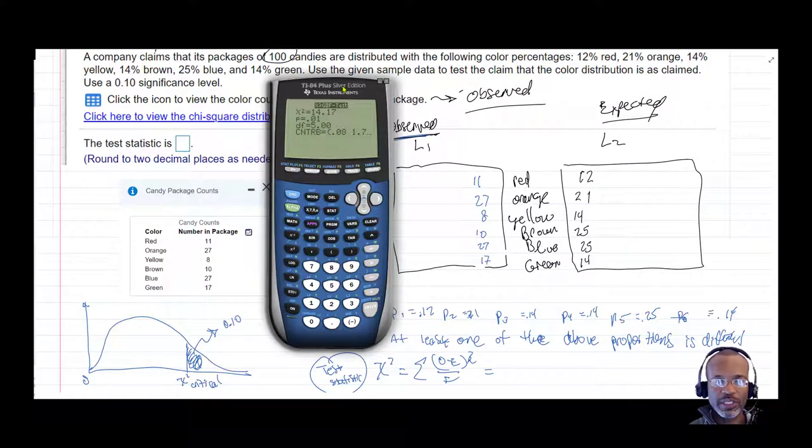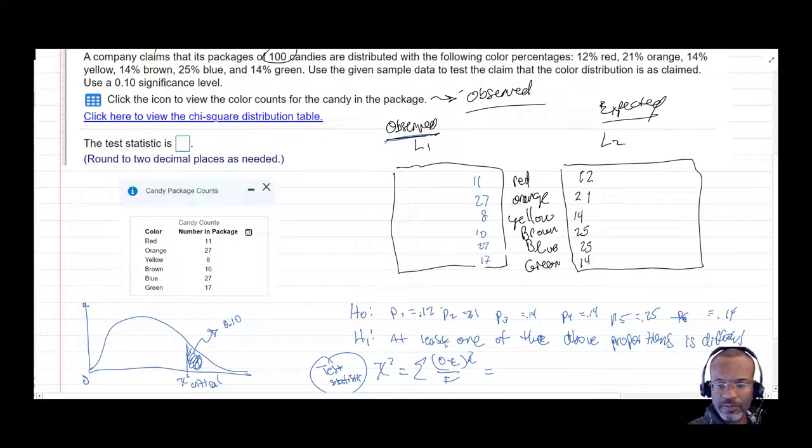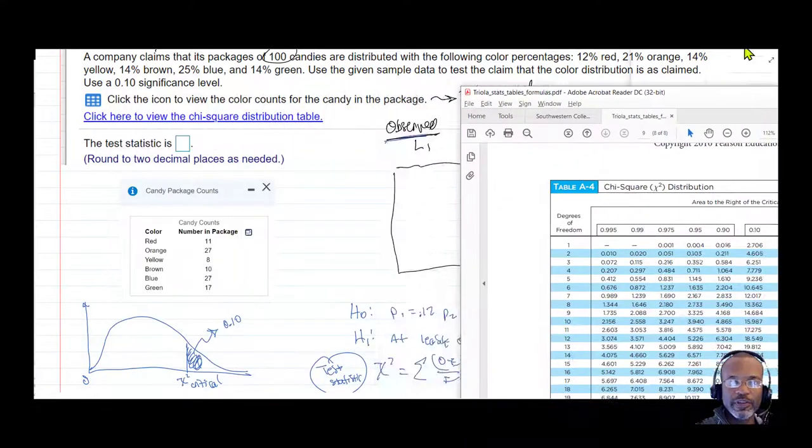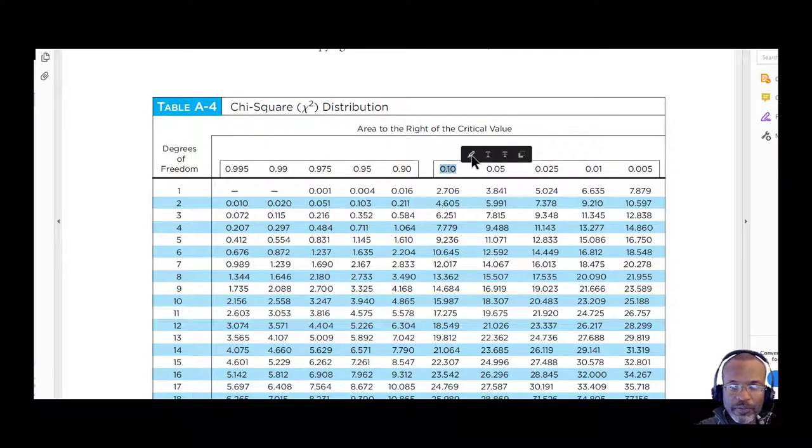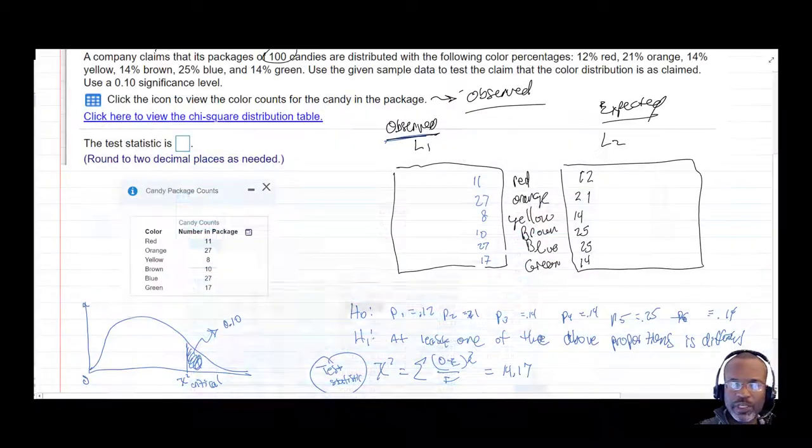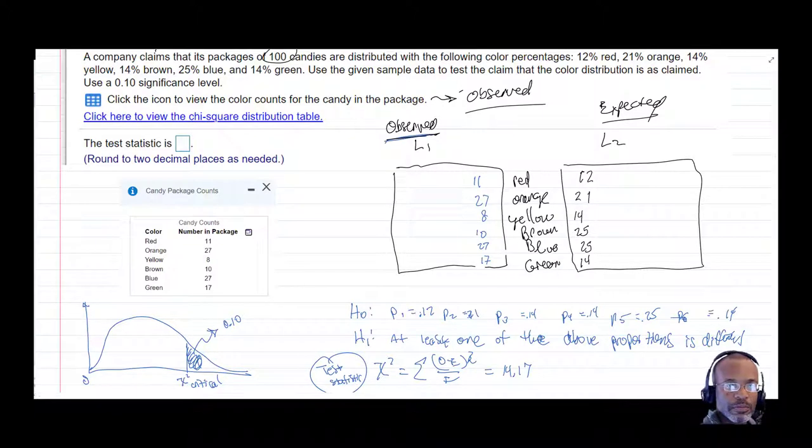So there's that. But let's just do it based on the critical value. So we have a test statistic of 14.17, and we want to compare that to our critical value. Well, our critical value is going to come from our test. Remember, our alpha level is 0.10, and our degrees of freedom is 5. And so where those two intersect is the 9.236. So that's our critical value, 9.236.